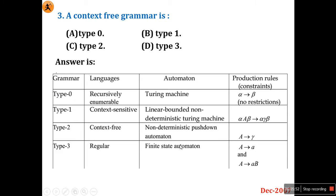Type 2 is context-free grammar, read by a non-deterministic pushdown automata. Type 3 is regular grammar, read by a finite automaton. So a context-free grammar is Type 2 — very straightforward if you know this table. Option C is the right answer. They may also ask which machine reads a Type 2 grammar: the answer is non-deterministic pushdown automata.